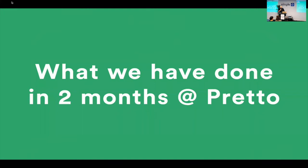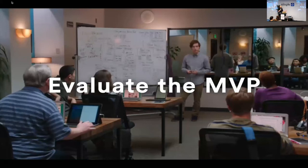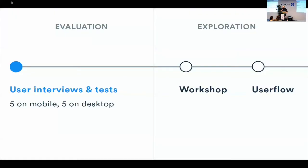This is my story for tonight — what we have done in two months at Preto. I arrived at Preto in July. In two months we evaluated our MVP, put many improvements online on mobile and desktop, and mostly built a version 2 with a user account. The first action was an evaluation of the MVP, version one. This is the project timeline — you see the two steps: evaluation and exploration. For the evaluation step I realized 10 user interviews and tests, five on mobile and five on desktop.